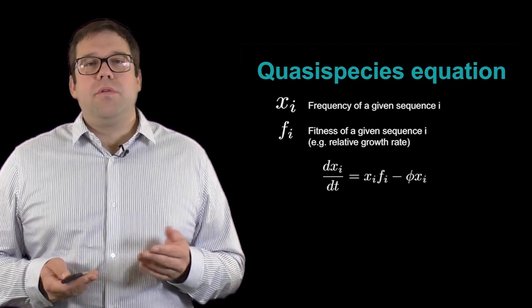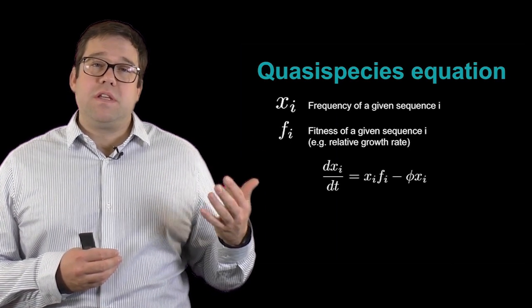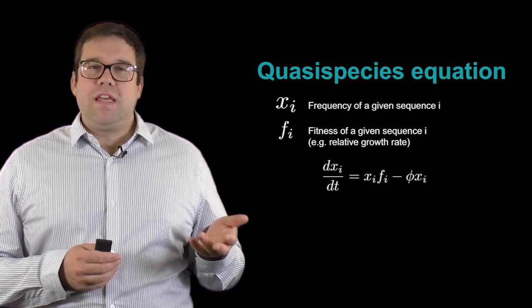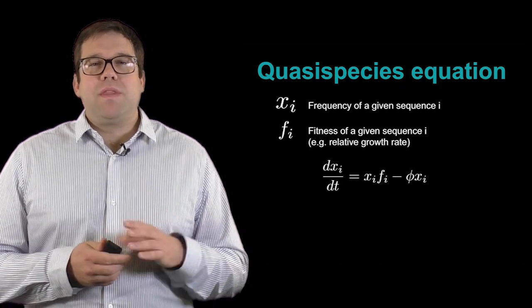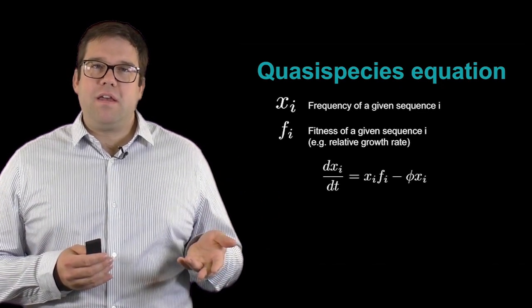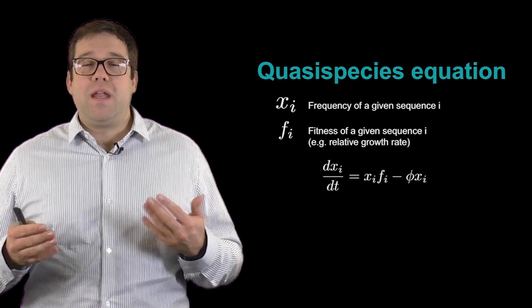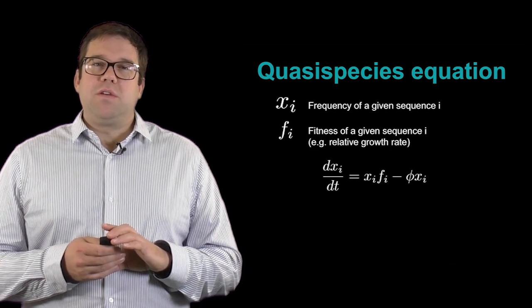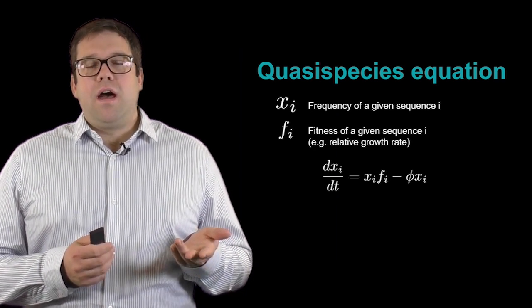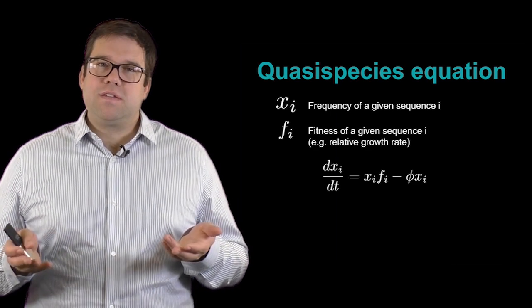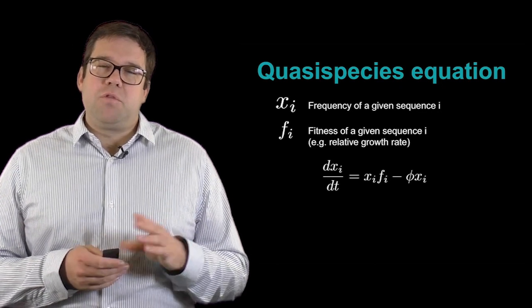Now we can talk about the rate of change of the total abundance or frequency of one sequence. This would be dx_i/dt, where dt is really measured in generations because we're thinking about entire generations here. What that would be is some x_i times f_i, so that's just the frequency times the growth rate. It says how fast you're growing is proportional to your fitness and how much abundance you already have as one sequence. Then minus some sort of death term, phi times x_i, which is just to ensure that the population size stays fixed. We're thinking about a very large but fixed-sized population for which this model applies.